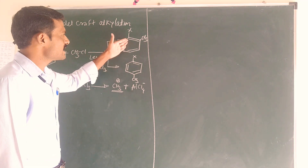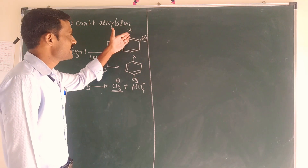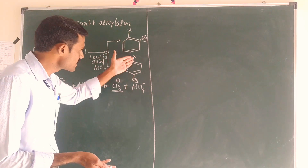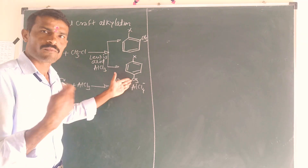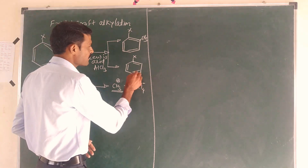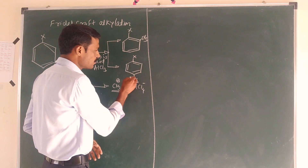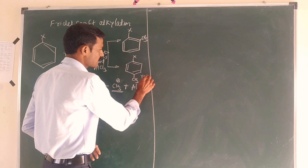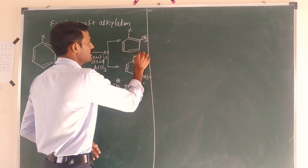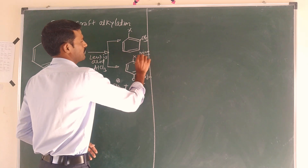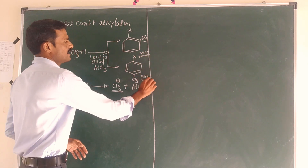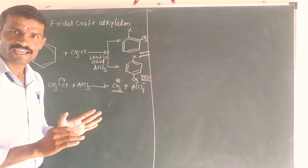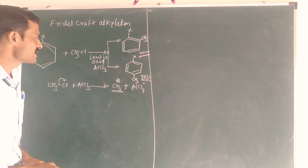One is the minor product, but the steric hindrance is less than the major. So the major product is determined by steric effects, and the minor product is the one with greater steric hindrance. This is the example.